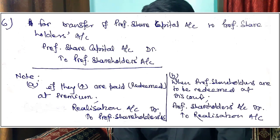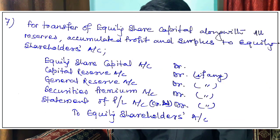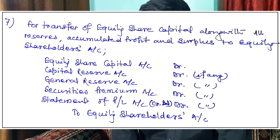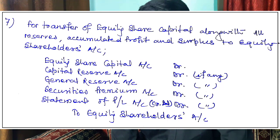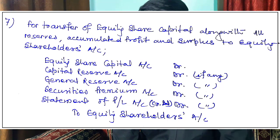Journal entry number seven is for transfer of equity share capital and all reserves, surplus, and accumulated profits to Equity Shareholders Account. So: Equity Share Capital Account debit, Capital Reserve Account debit, General Reserve Account debit, Securities Premium Account debit, Statement of P&L credit balance debit, and so on for all internal liabilities related to shareholders — all debit, to Equity Shareholders Account credit.